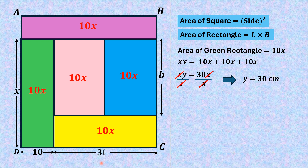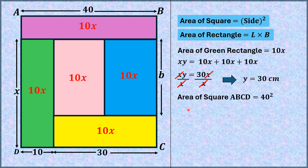We replace Y by 30. Since this length is 10 and this length is 30, the side length of this square is equal to 40 cm. From here, we can find the area of square ABCD using the formula: area of square equals the square of its side. So area of square ABCD = 40² = 1600 cm².